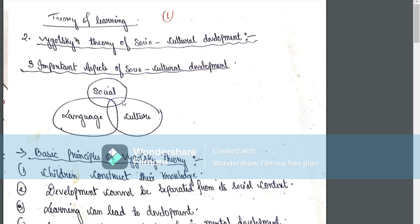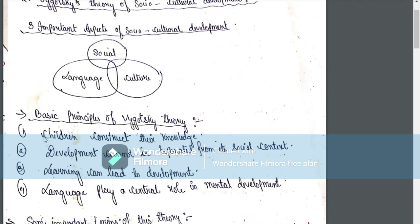The three aspects are social, language, and culture. This relates to social language and culture, and the development of knowledge. That is constructivism.